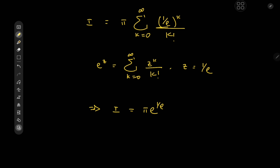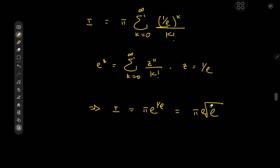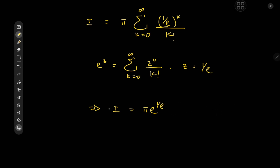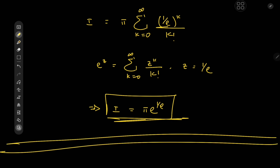Maybe we can even restate this to make it look even more over the top — I mean, over-the-top math is pretty much what we do here. This could be written as pi times the eth root of e, or some other form, but I'm just going to leave it as pi times e to the 1/e. This thing looks amazing in its own right. I really enjoyed the solution development and I hope you enjoyed the video as well. Be sure to like and subscribe — thank you, see you next time.